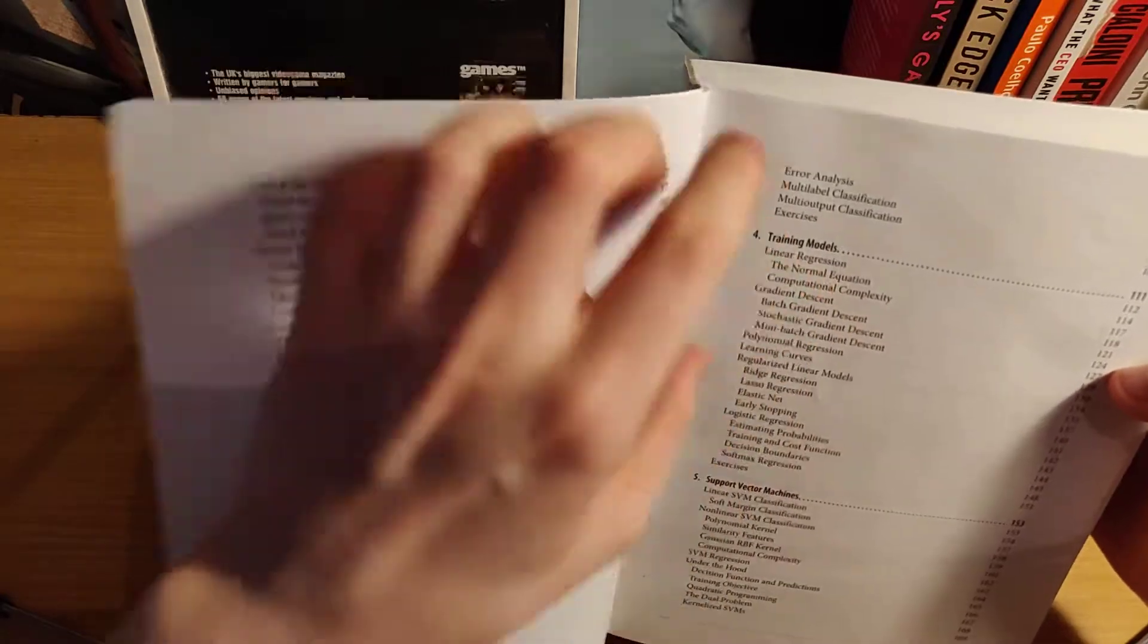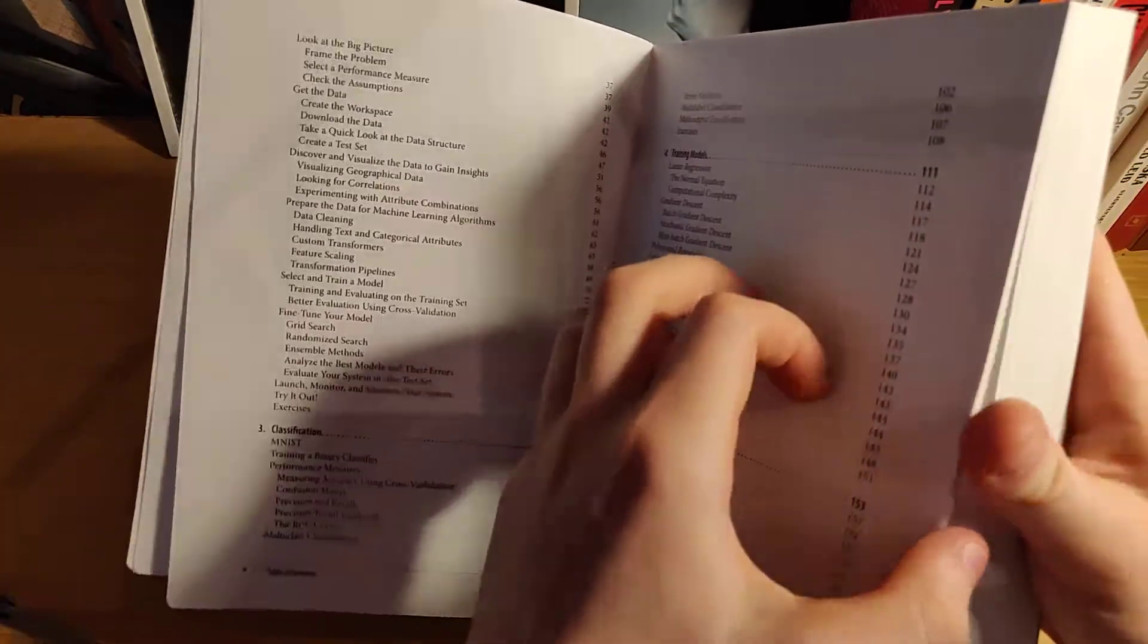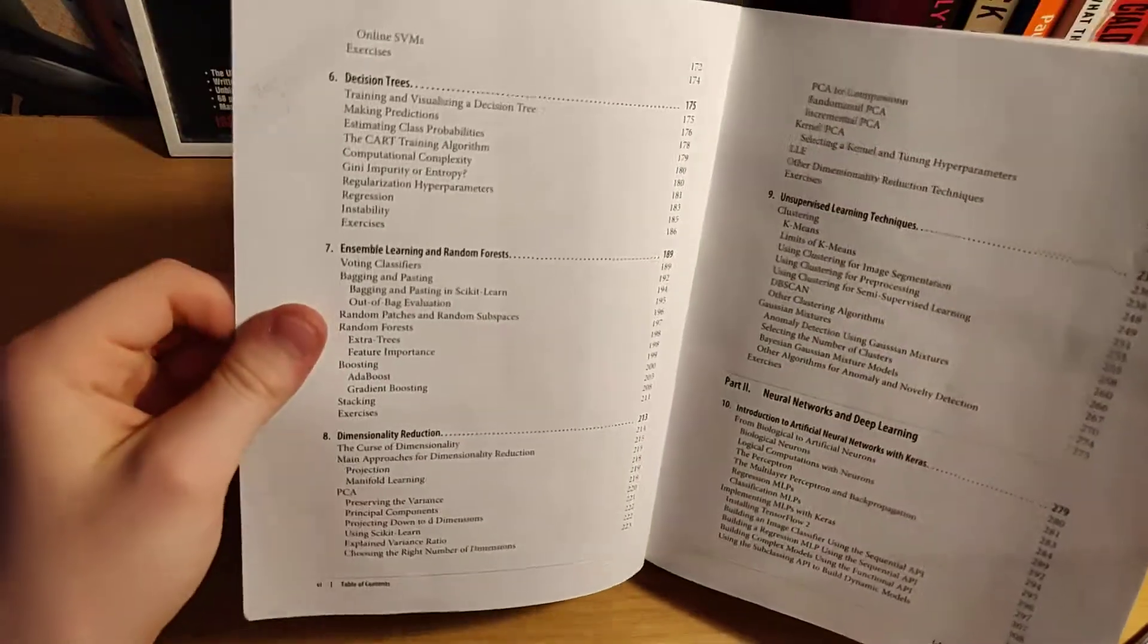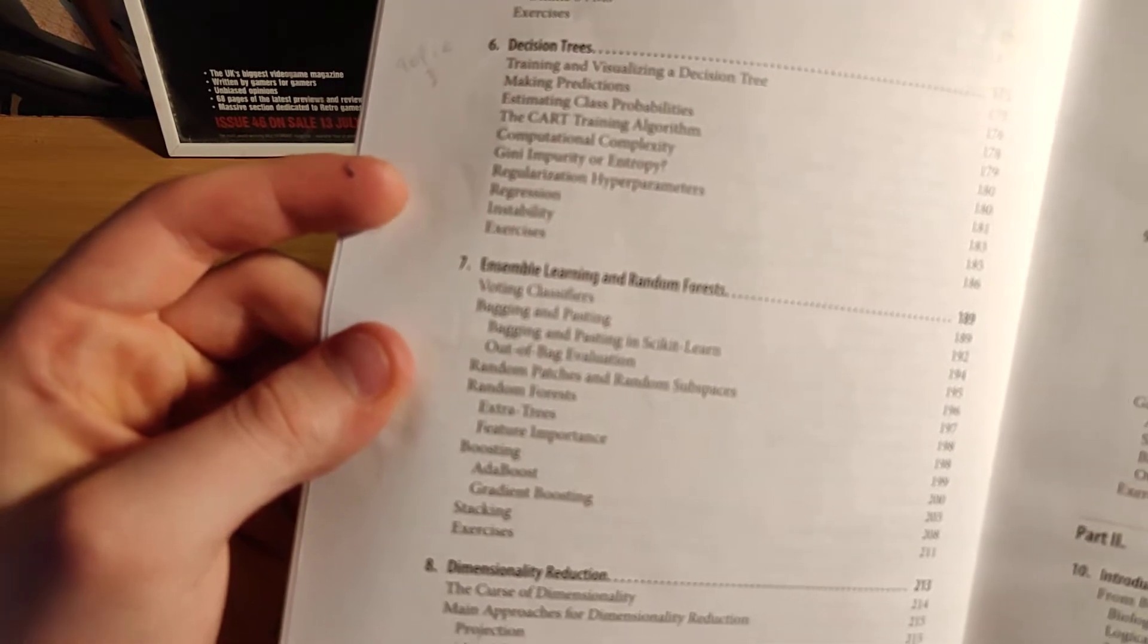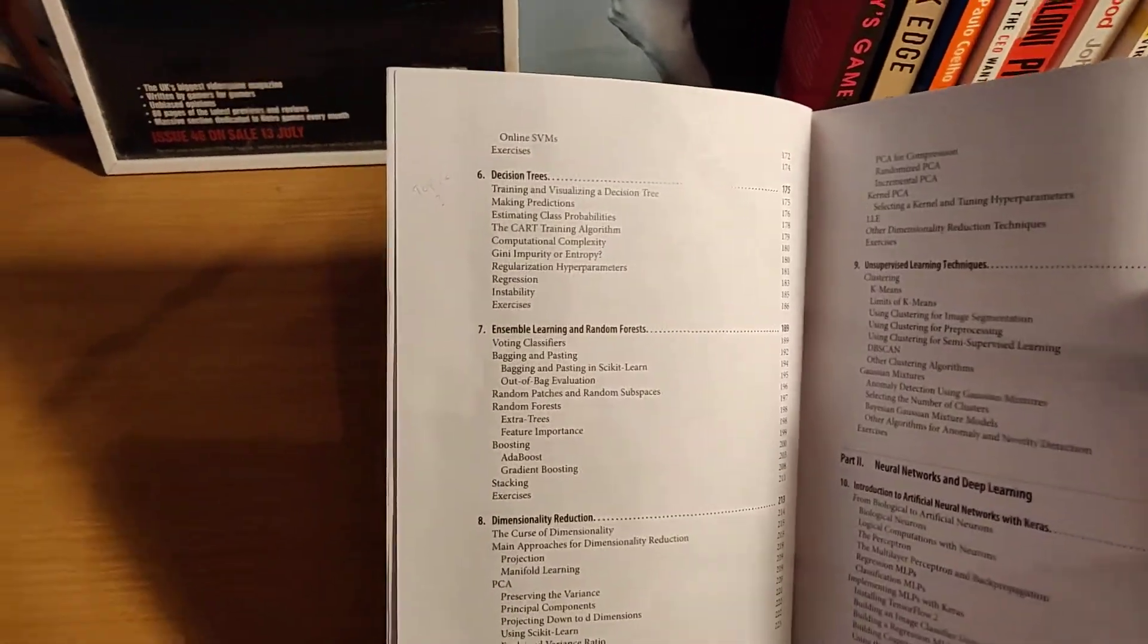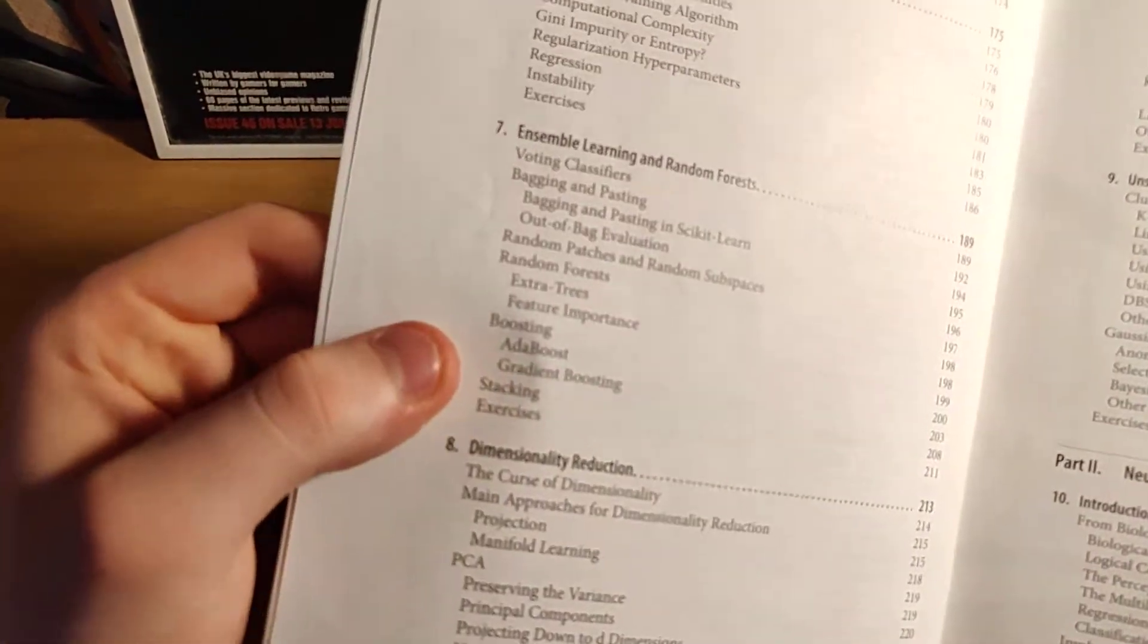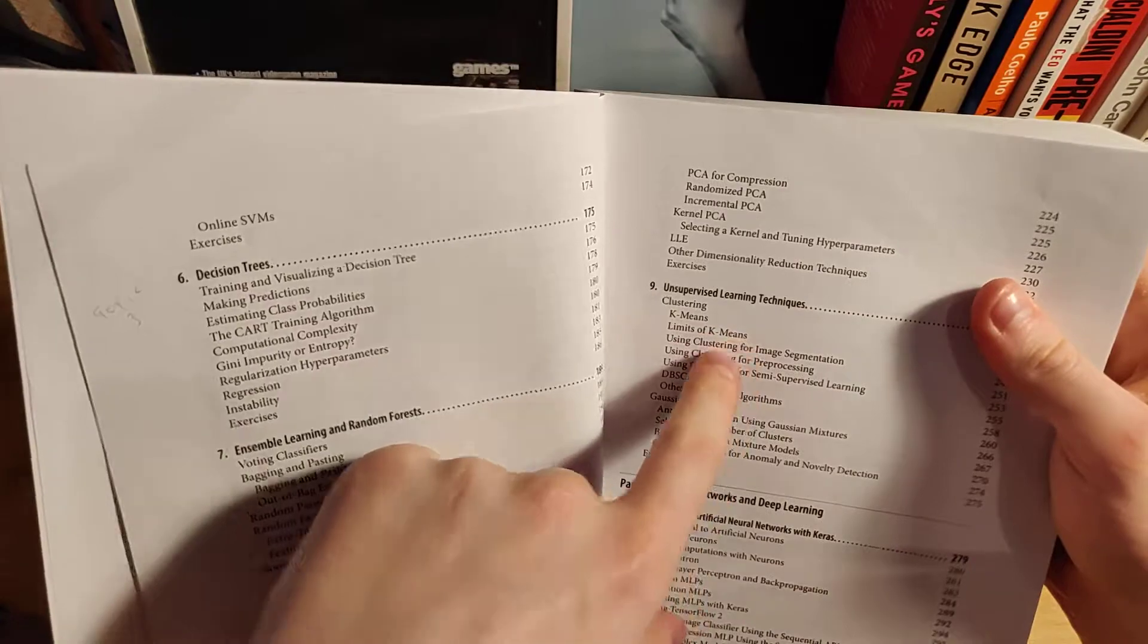So next is classification. The book covers training models, it covers support vector machines, it covers decision trees, ensemble learning and random forests, dimensional reduction, and unsupervised learning techniques.